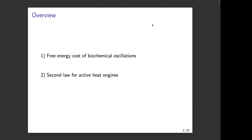The second part is the second law for active heat engines. An active heat engine is simply an engine where the medium, instead of being a standard equilibrium reservoir, is a reservoir made of active matter. The word 'active' is not precisely defined by an equation like 'non-equilibrium' is — sometimes it's a synonym, sometimes it's not. But in this context, I will define it with an equation.